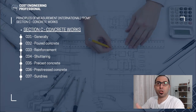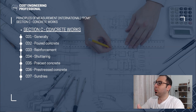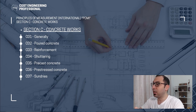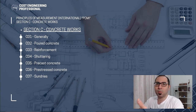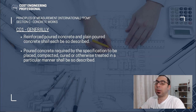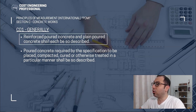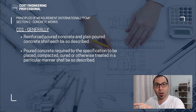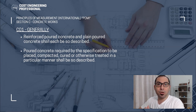Section C of BOQ, which is concrete works in accordance with Principles of Measurement International, consists of several subsections. The first one is generally about concrete works, then we have poured concrete, reinforcement, shuttering, precast concrete, pre-stressed concrete, and some sundries or miscellaneous small items. Generally, concrete works includes reinforced concrete and PCC or plain cement concrete — each must be described as reinforced poured concrete or plain poured concrete.